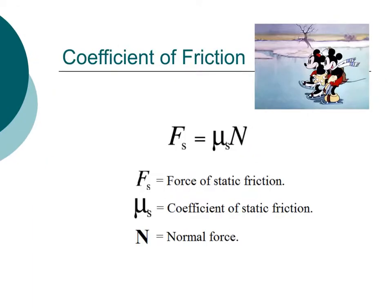Frictional resistance is related to the relative motion of two solid objects, and it's usually proportional to the force which presses the surfaces together, as well as the roughness of the surfaces. Since it's the force that's perpendicular or normal to the surface, we indicate the normal force with a capital N.